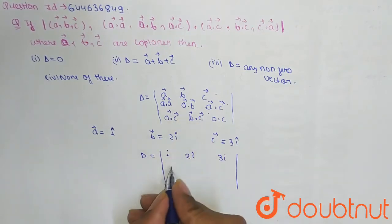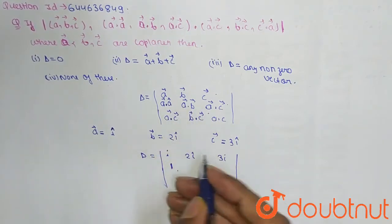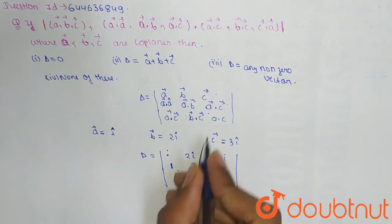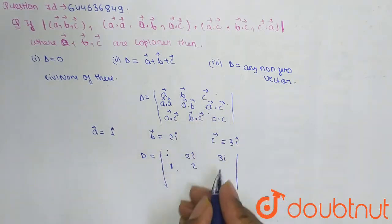I cross I is 1, I cross 2I is 2, A cross C means I cross 3I is 3.